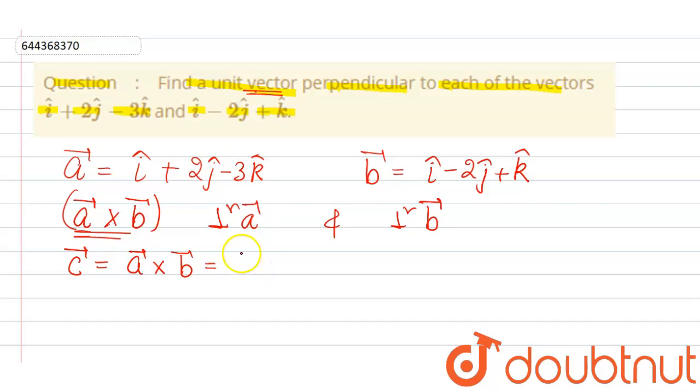So a cross b can be determined by using determinant method. We write i cap, j cap, and k cap here and writing the coefficients 1, 2, minus 3, 1, minus 2, 1.